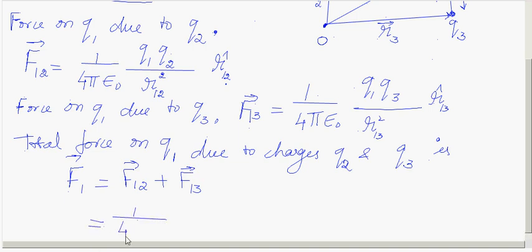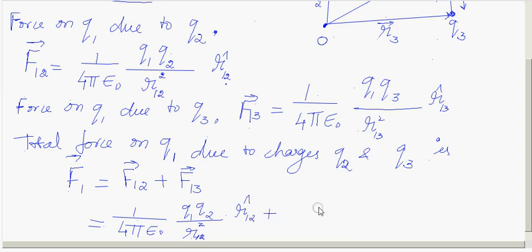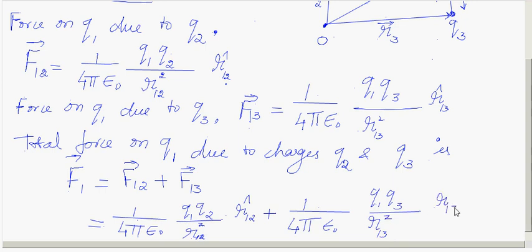Writing it out: F1 = (1 / 4πε₀) × [ (Q1·Q2 / R12²) × R̂12 + (Q1·Q3 / R13²) × R̂13 ].